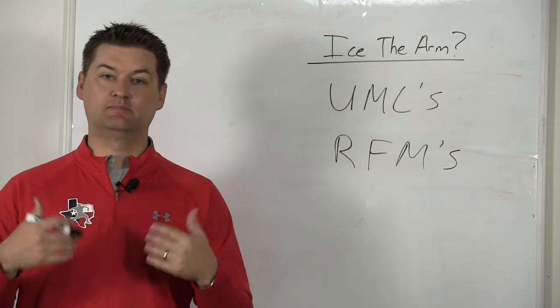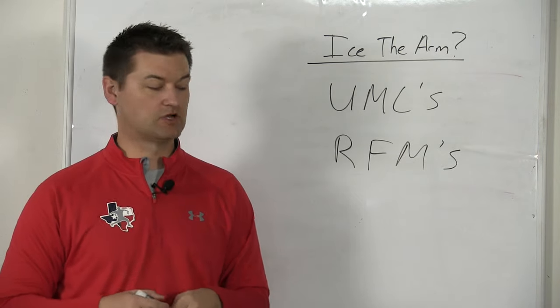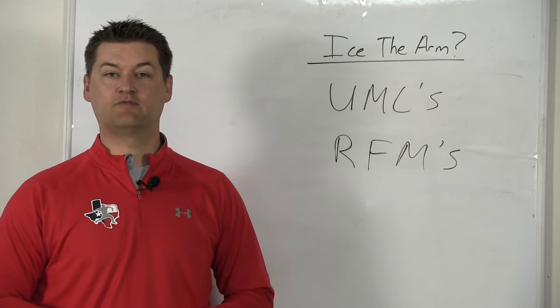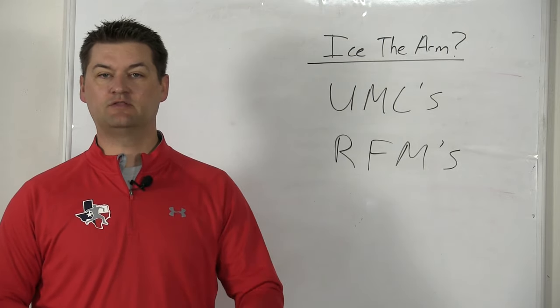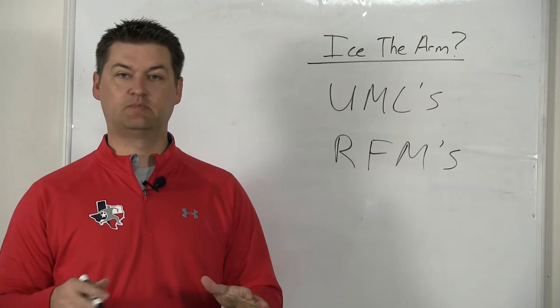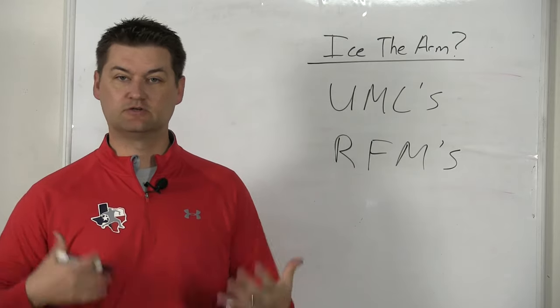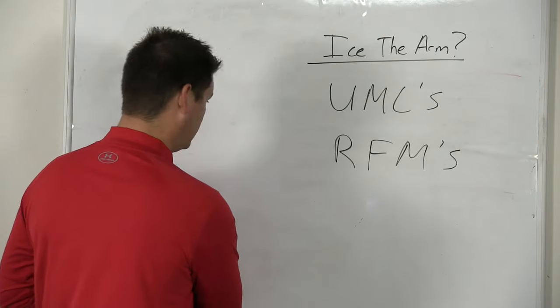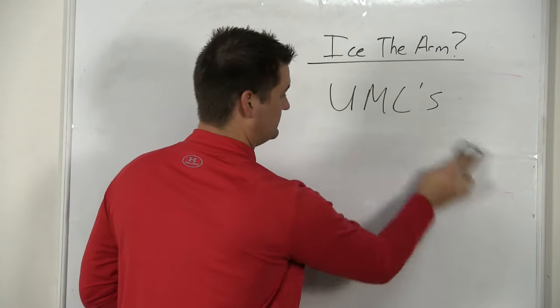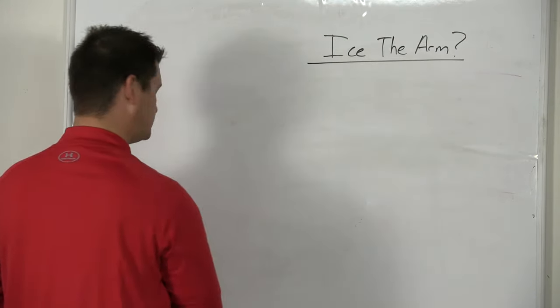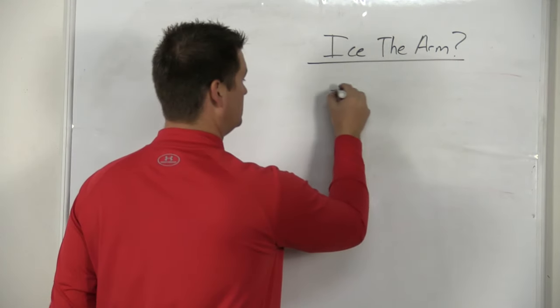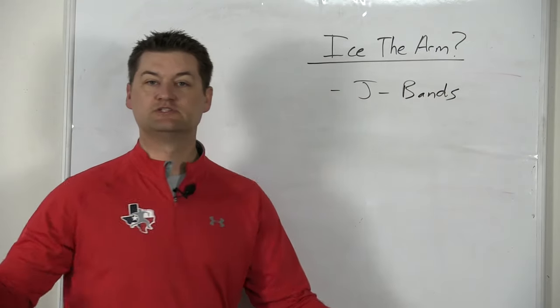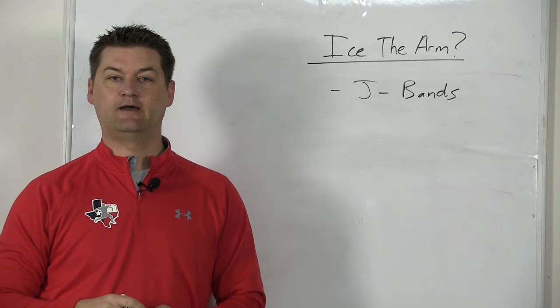We need the blood flow, but how do we start regenerating the arm in the recovery process? As soon as you're done throwing, as soon as you're done for the day but before you've left the field while your body's still primed and ready to go, that's when you start doing things in the restorative functional movement area. What are some examples of restorative functional movements? One would be like the J-bands, the resistance tubing, doing your tubing stuff.